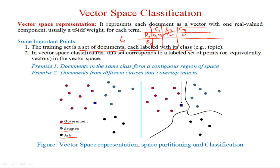Now we will go through two premises. Premise one states that documents in the same class form a continuous region of space, meaning there may be a distinct boundary with one class on one side and another class on the other side. Premise two states that documents from different classes don't overlap — we cannot put blue circle documents into the class of red circle documents.